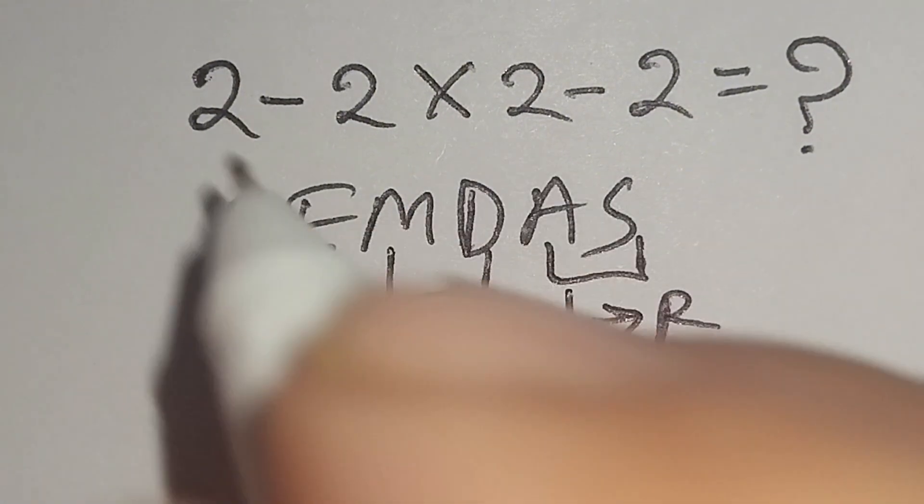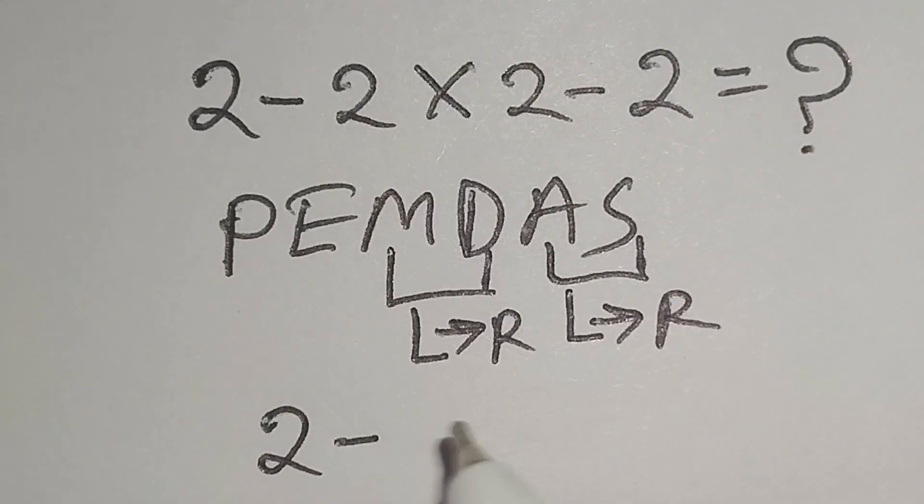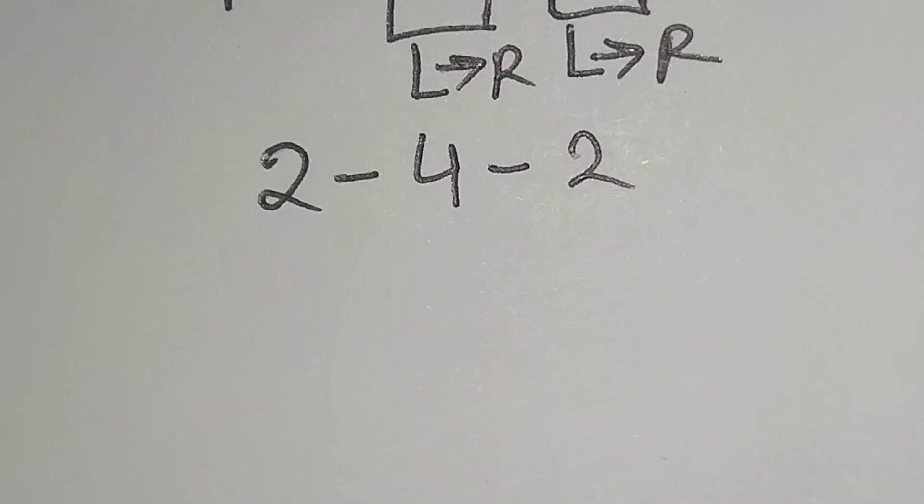this multiplication. Here, 2 minus 2 times 2 gives us 4, so we get 2 minus 4 minus 2. Now I have to